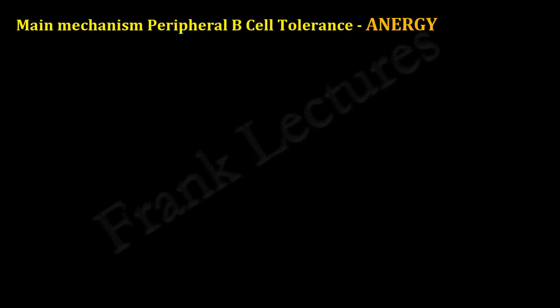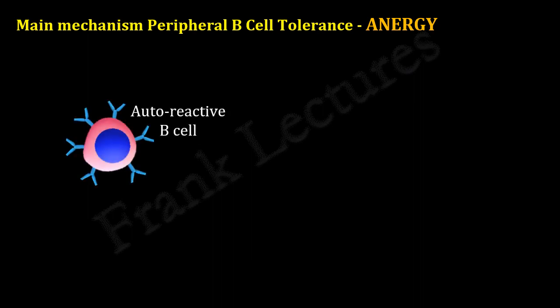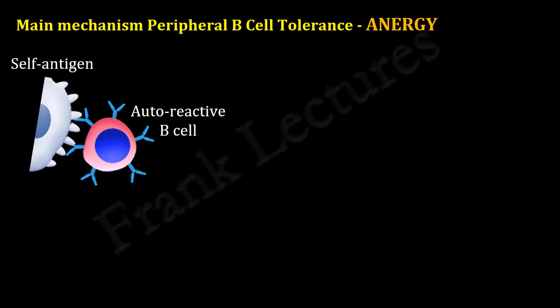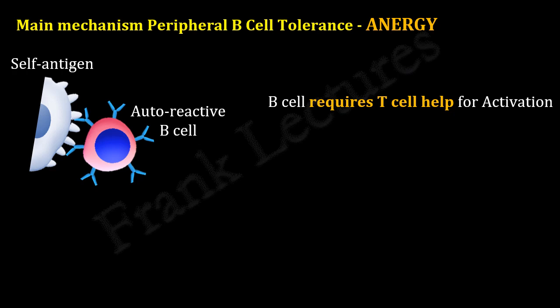The main mechanism of peripheral B cell tolerance is anergy. Suppose this is an autoreactive B cell in the periphery — it recognizes and binds its specific self-antigen. Now, as we said, B cell activation requires T cell help. This means that the T helper cell must be autoreactive to the same self-antigen which the autoreactive B cell encounters.